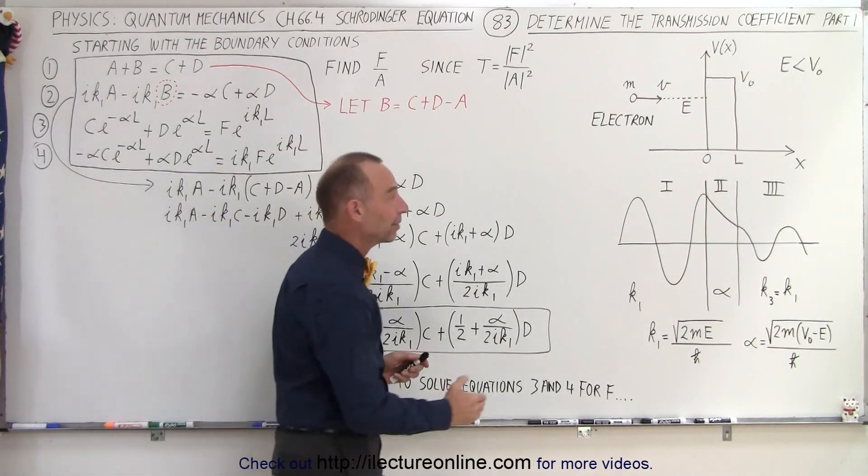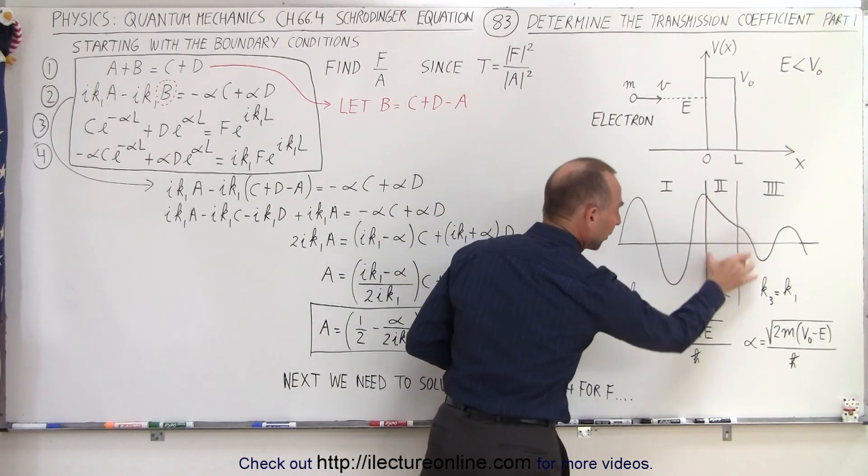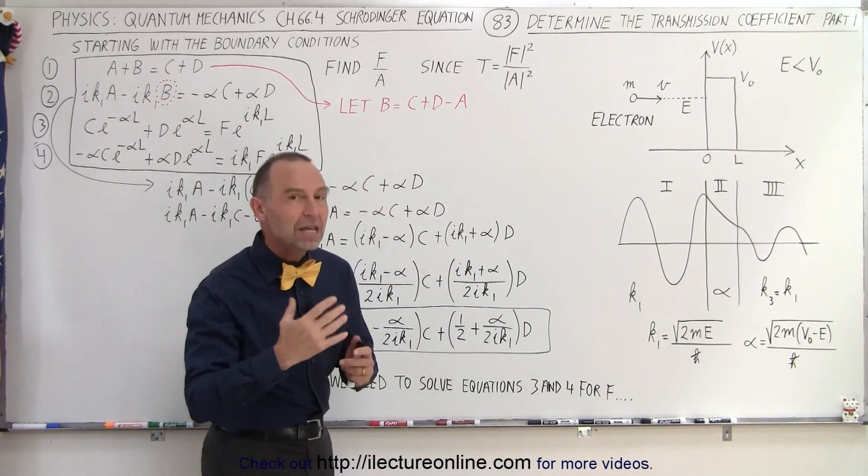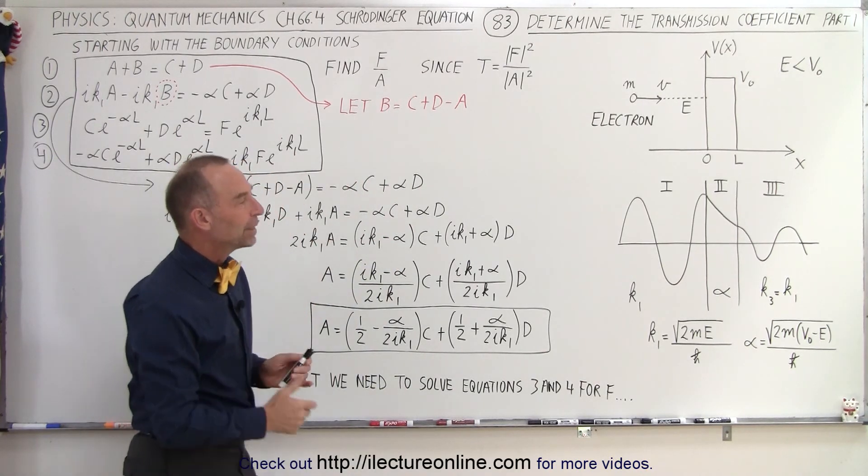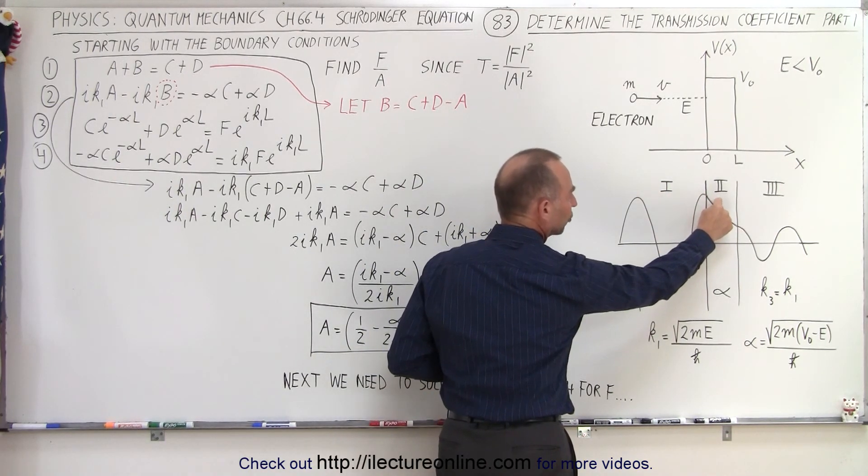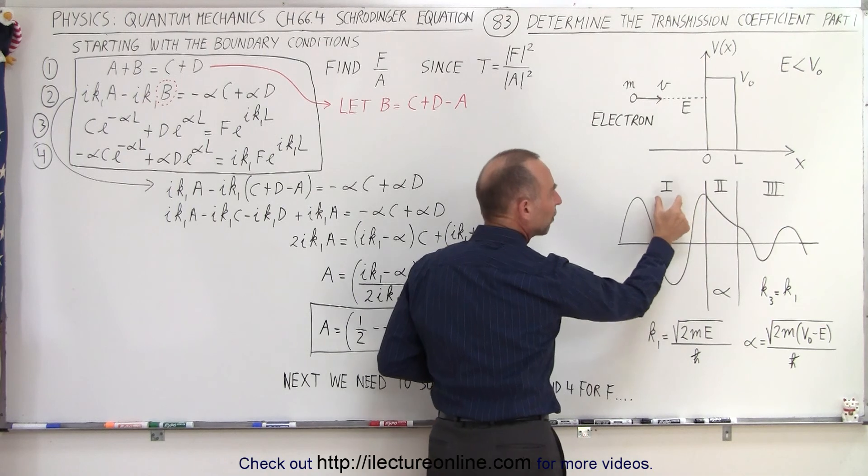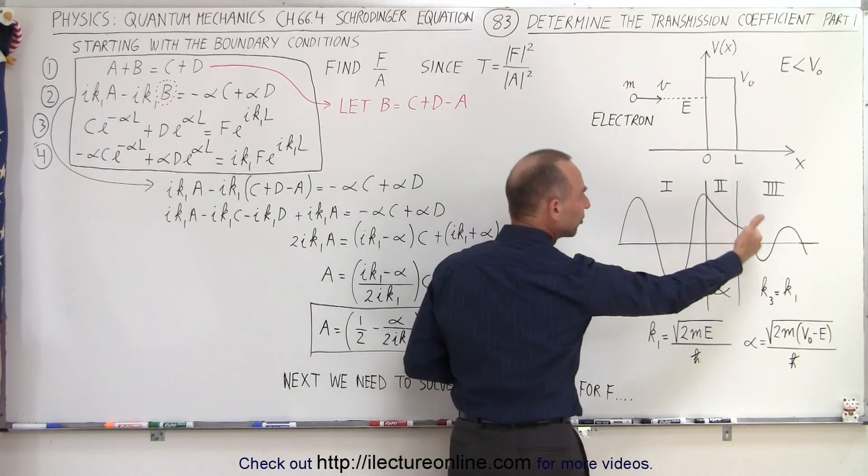What we had to do is find the boundary conditions at the two sides of our barrier, through which the particle will go if the barrier is not wide enough. We set the wave function of region 1 equal to the function of region 2, and then the derivative of region 1 equal to the derivative of region 2, and we did the same on the other side.